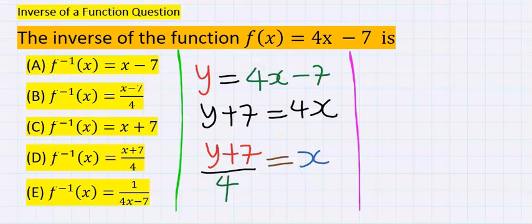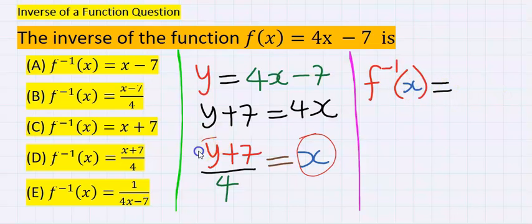Step number 3. Take the inverse of x. That is, instead of x, we are now going to take the inverse of the x. This simply means, instead of y, I'm now going to have x plus 7 divided by 4.